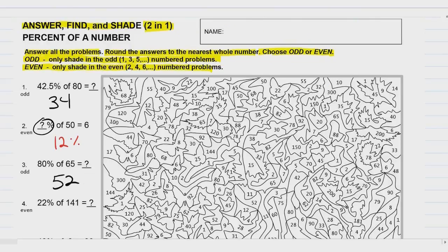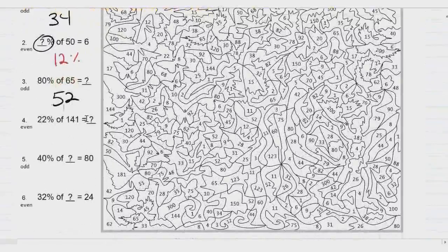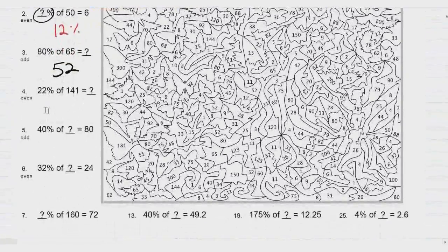And if you picked odd, you would shade all the 52s you find in the picture. What I'd like you to do is try problems 4, 5, and 6. When you're finished with those, come back to me and we will check your answers. I will see you in a bit.